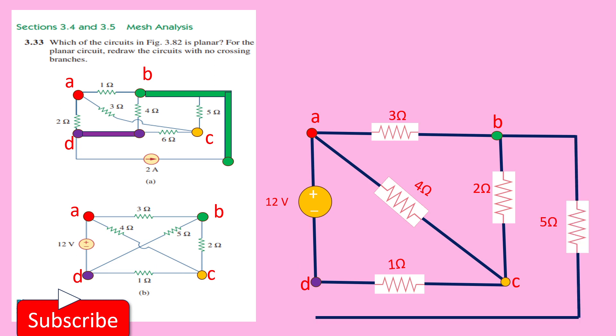In order to avoid the crossing. If you look at this, we don't have any crossing branches. That's why this is also your planar circuit. Thank you. Hope you have understood.